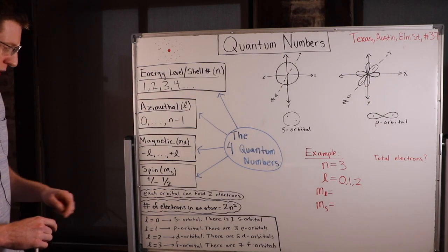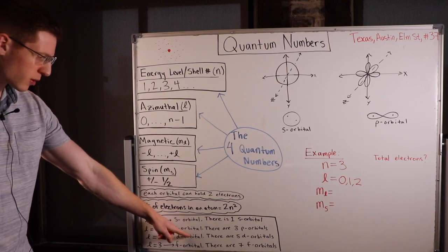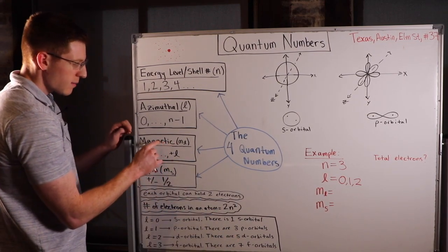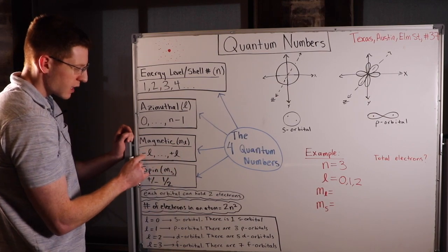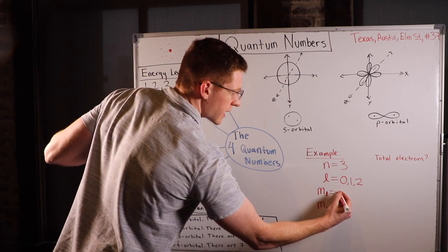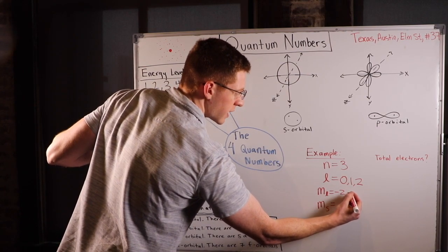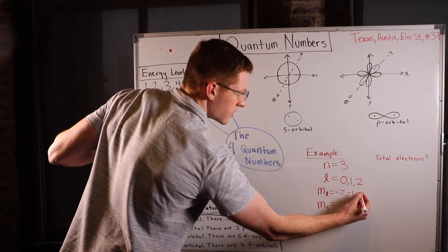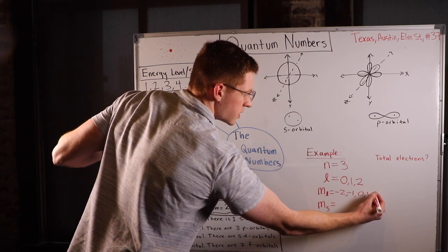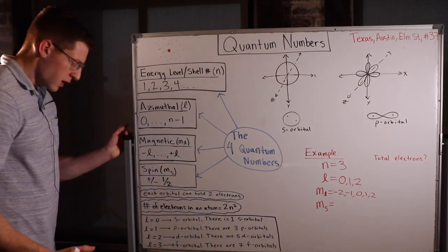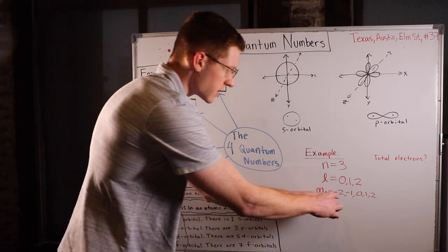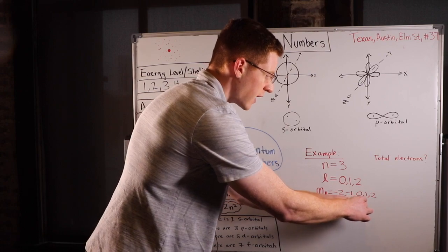L equals 2 actually means we're at a d orbital. There are five d orbitals, so that's why the magnetic number goes from negative L to positive L. If we pick L equals 2, we go from negative 2 to positive 2: negative 2, negative 1, 0, 1, and 2. So when L is 2, we're at a d orbital, and these five values all represent the different d orbitals.